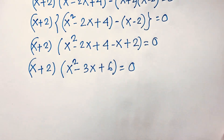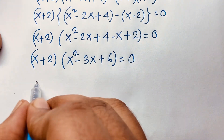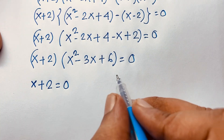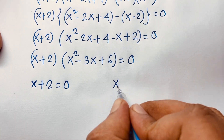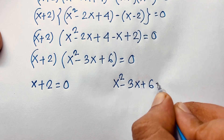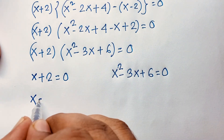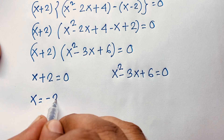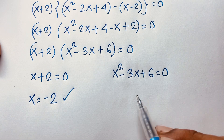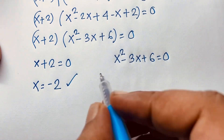Now we find two cases. Our first case is x plus 2 equals 0, which gives x equals negative 2. So we find our real solution: x equals negative 2. The second case is the quadratic equation x squared minus 3x plus 6 equals 0.